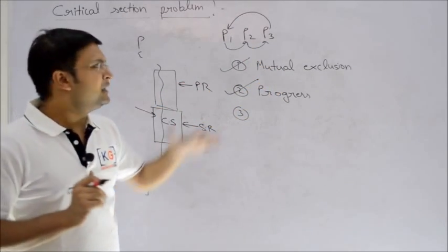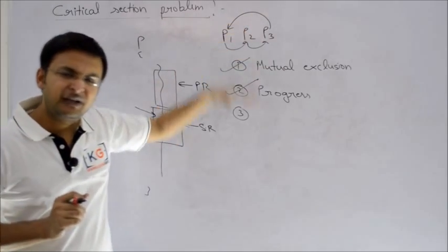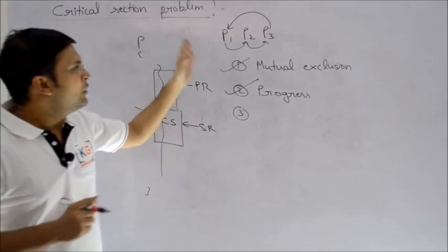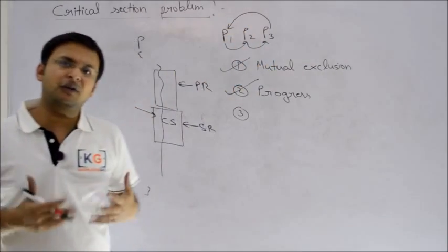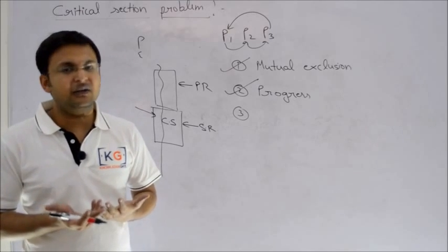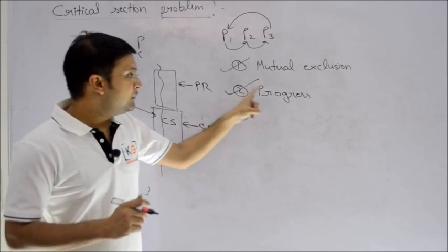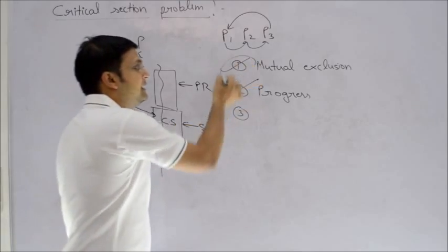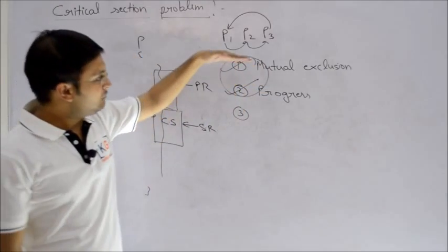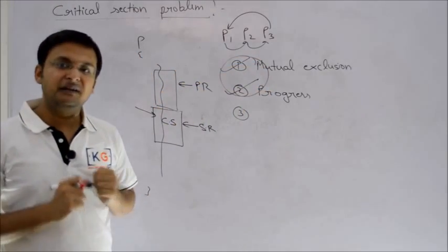If you want to understand a more theoretical thing, you can argue that if you do this, the system will also be consistent. I take this point, but the efficiency will be very poor. Because out of 100 processes, only 2 or 3 processes actually require to enter into critical section. Because of this reason, we treat progress also as mandatory criteria.